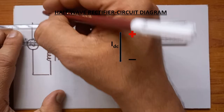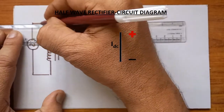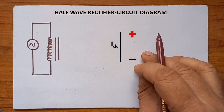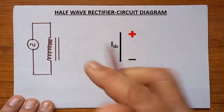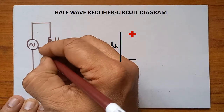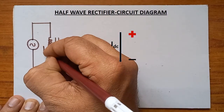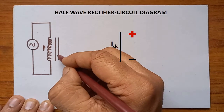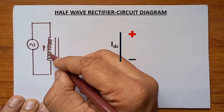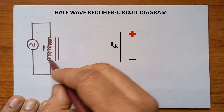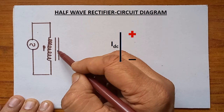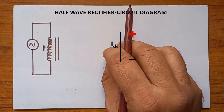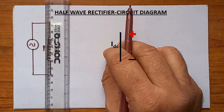These two are the ends of the primary of the step-down transformer — you can write it as primary, P for primary. Here, in between the primary and secondary, there is no contact; both are separated by the insulation. That is why the two lines are drawn.